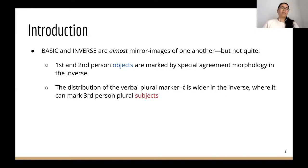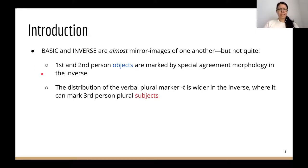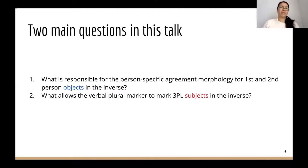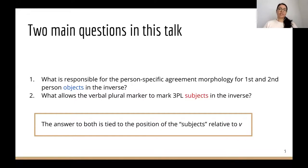These basic and inverse paradigms are almost mirror images of each other, but not quite—there are a couple of divergences. In the inverse compared to the basic, first and second person inverse objects are marked by special agreement morphemes. The other puzzle concerns third person plural subjects: in the inverse, they can be marked by a verbal plural marker that cannot occur with such arguments in the basic. These two patterns form the two main questions: what is responsible for the person-specific agreement morphology for first and second person objects in the inverse, and what allows the verbal plural marker to mark third plural subjects in the inverse?